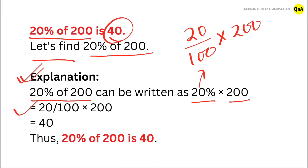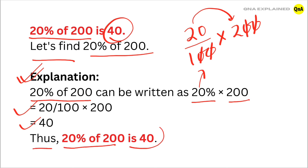First, cancel out the zeros. We have 20 multiplied by 2, which is equal to 40. Thus, 20% of 200 is equal to 40.